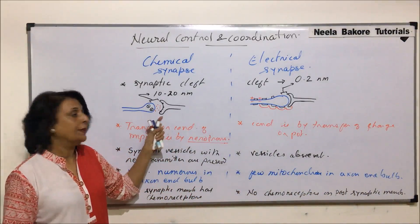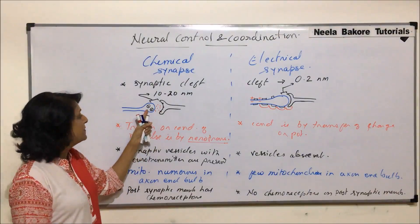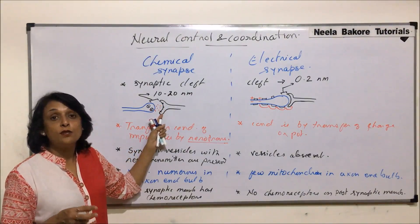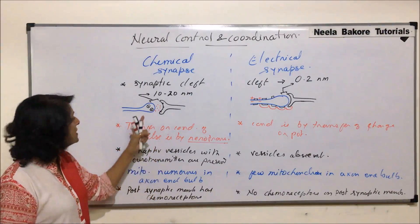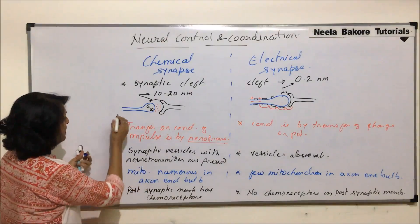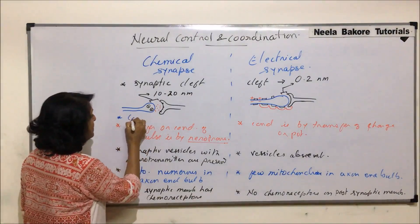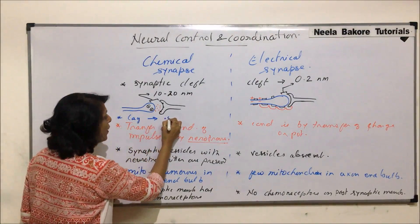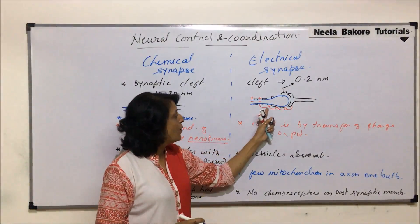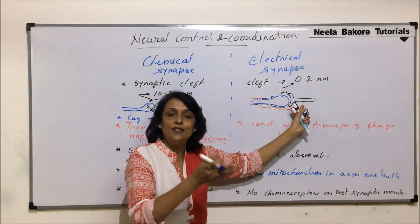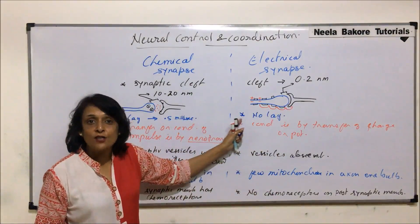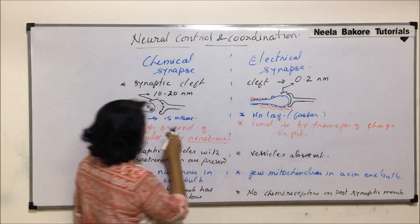In chemical synapse, for the impulse to travel, the stimulus arrives at the axon end bulb, vesicles rupture releasing neurotransmitters, neurotransmitters bind to the receptor, and membrane permeability changes — all of this takes some time. So there is a lag period of 0.5 milliseconds in chemical synapse. In electrical synapse, there is no lag because the impulse moves directly from one axon membrane to the dendrite membrane, making it faster.